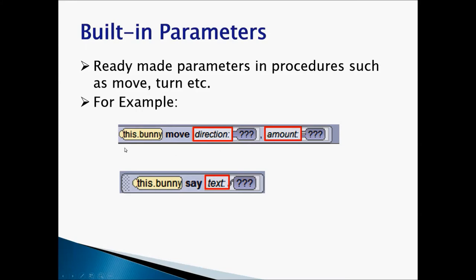Say for example, we have move procedure and what direction, what amount, and say text. Direction, amount, text. So these are some built-in parameters that we have been using in class so far. So every time I drag a move procedure, it's going to ask me which direction I need to go, how much amount I need to move. And every time I make an object say something, it's going to ask me what text I want. So direction, amount, text. These are the built-in parameters with your procedures.